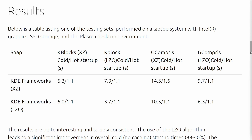Then there's GCompris, which is educational entertainment software. For the cold startup of K-Blocks, XZ gives 6.3 seconds, with 1.1 seconds for the hot startup — meaning the app has already started once and may still be in memory. The hot startup times are almost all the same across the board, so we'll focus on cold startups. With LZO compression on a KDE framework, the cold startup becomes 6 seconds — a decent but not dramatic improvement over 6.3 seconds.